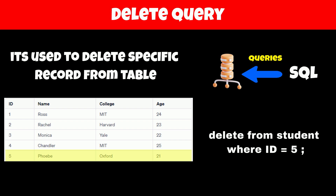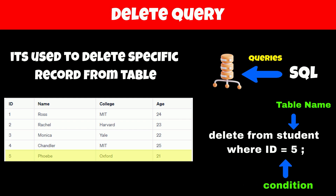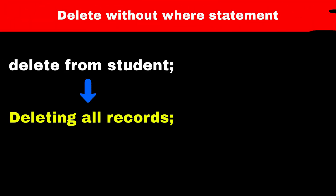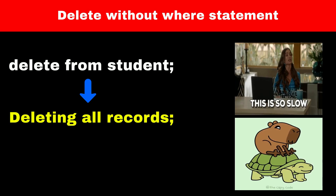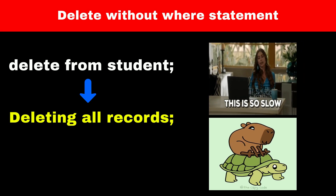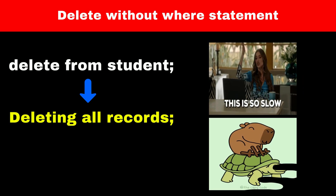In this query, 'student' is the name of the table and 'id = 5' is the condition that tells the database which record to delete. If you execute a DELETE command without a WHERE clause, then it will delete all the records from the table. But deleting all records using the DELETE command is slow.